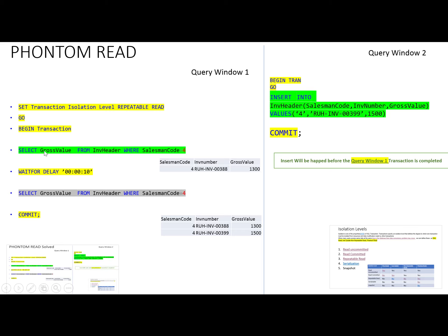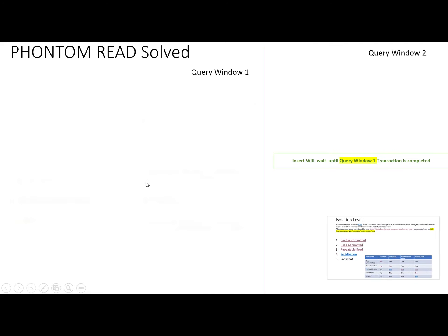Between these two select queries, a delay occurs and during this delay another user inserts a value. The phantom reads will return different results for the same query. In the first transaction, the first select statement has one result and the second select statement in the same transaction has different results — this is the phantom read. If we are using repeatable read, it does not solve the problem of phantom reads. To solve the phantom read problem, we change the isolation level to serializable or snapshot.